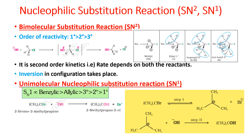The unimolecular nucleophilic substitution reaction is SN1. The reactivity order for SN1 is: benzylic, allylic, tertiary, secondary, and primary — which is the reverse of SN2. In SN1, the tertiary group reacts fastest because it forms a stable carbocation.